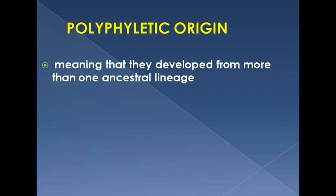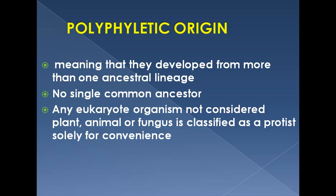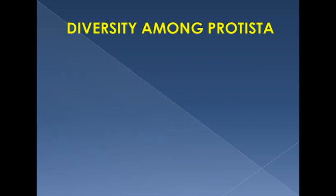All protists have polyphyletic origin, meaning they do not share a common ancestor — they have evolved from more than one type of ancestor. Any eukaryotic organism which is not considered a plant (member of Kingdom Plantae), an animal (member of Kingdom Animalia), or a fungus (member of Kingdom Fungi) is classified as a protist solely for convenience. There is no other reason to include them in Kingdom Protista except that they are excluded from the rest of the kingdoms.